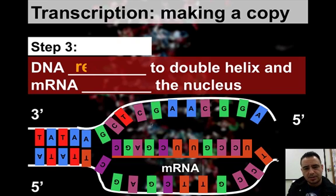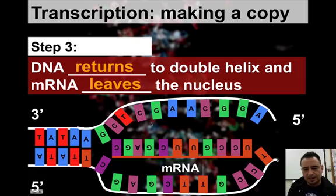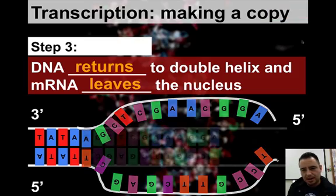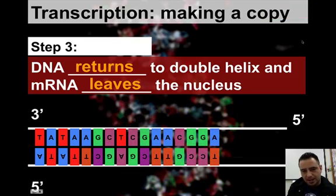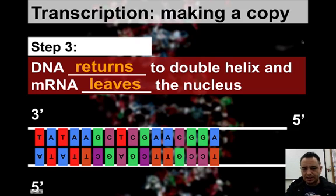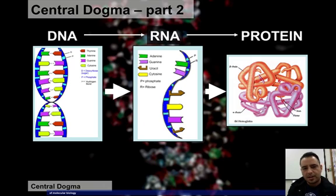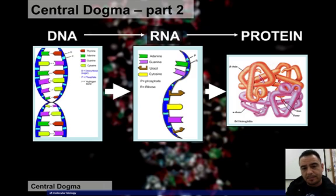Then DNA is going to return to the double helix, and mRNA is going to leave the nucleus. mRNA is leaving the nucleus and going out to the ribosome. DNA is going to close up, reattach the hydrogen bonds, and coil up again. So that's transcription — we make RNA because DNA couldn't leave the nucleus. Now we're going to make a protein.